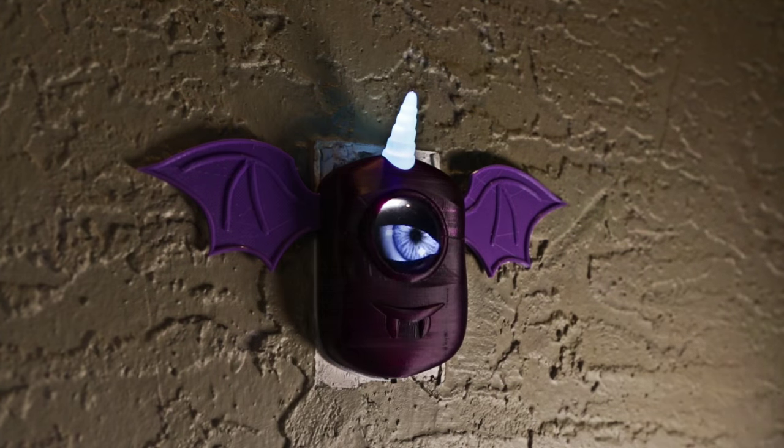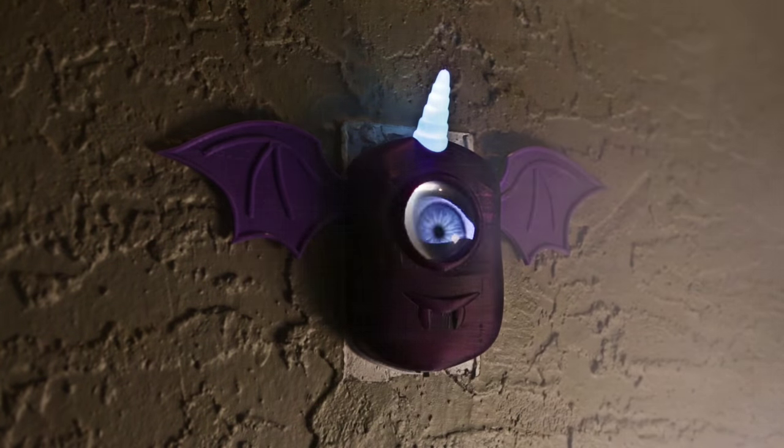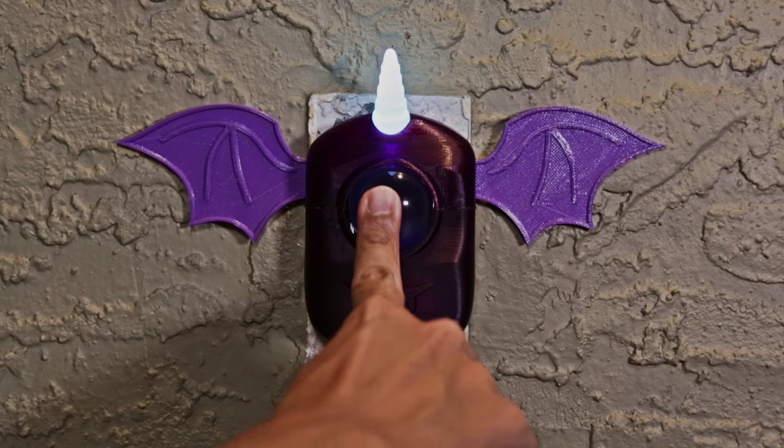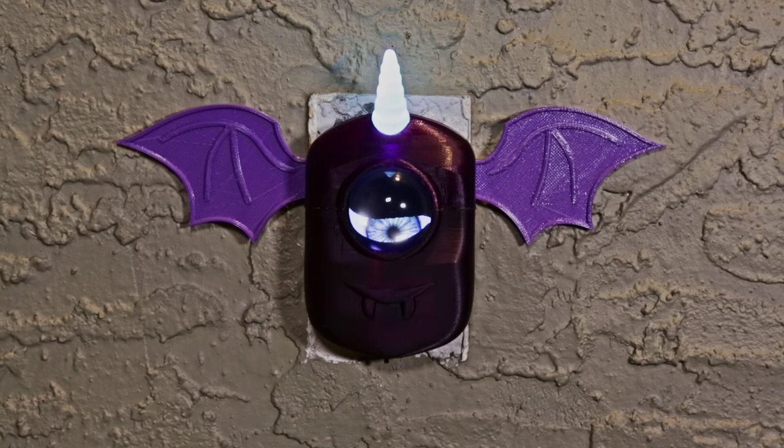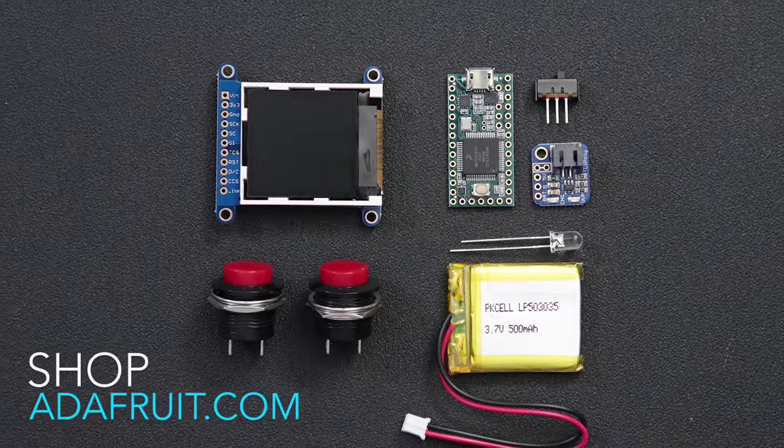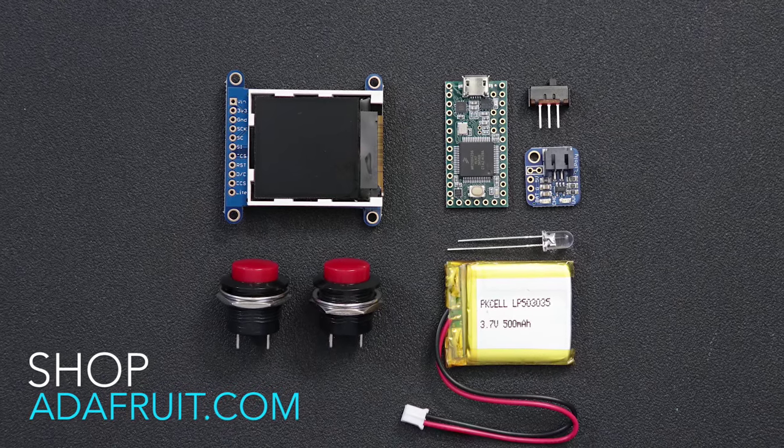This cute and creepy Halloween project is a collaboration with Phil B. It uses the Teensy microcontroller and a TFT display inside 3D printed parts to make an animatronic eye doorbell. You can get the parts and full tutorial from the Adafruit Learning System.